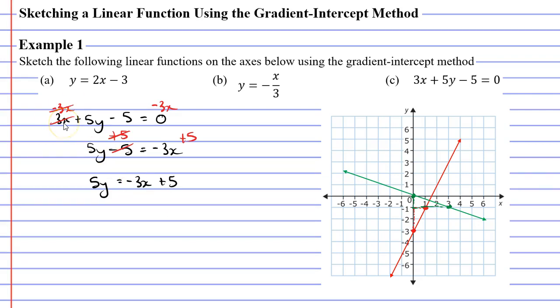Lastly, I'd like to divide by 5 and I need to do this to every single term. This will cancel the 5 in front of the y. So I get y equals negative 3x over 5 plus 1 because 5 divided by 5 is 1.